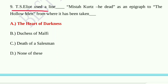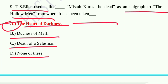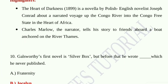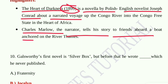Question number nine: T.S. Eliot used the line 'Mistah Kurtz — he dead' as an epigraph to The Hollow Men. From where has it been taken? Option A, Heart of Darkness; option B, Duchess of Malfi; option C, Death of a Salesman; option D, None of these. Option A, Heart of Darkness, is the correct answer. In Heart of Darkness we find Mistah Kurtz. Heart of Darkness, published in 1899, is a novella by Polish-English novelist Joseph Conrad about a voyage up the Congo River into the Congo Free State. Charles Marlow, the narrator, tells the story to friends aboard a boat anchored on the River Thames.